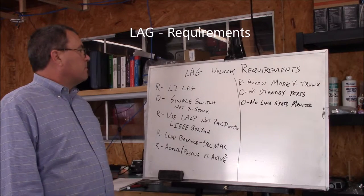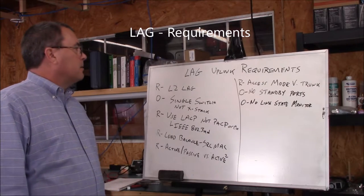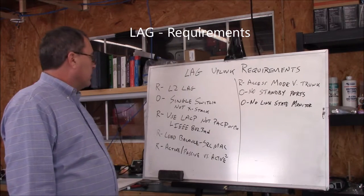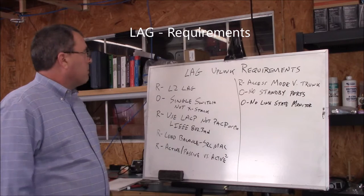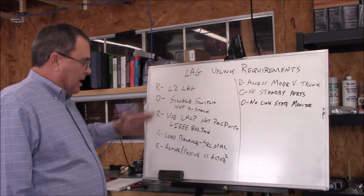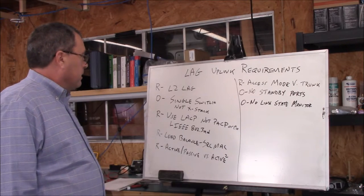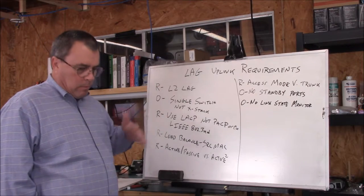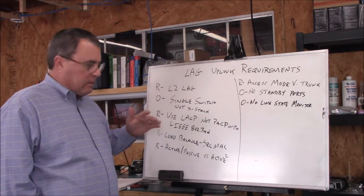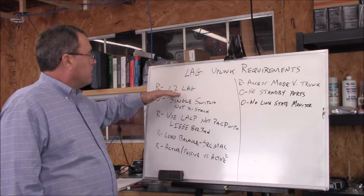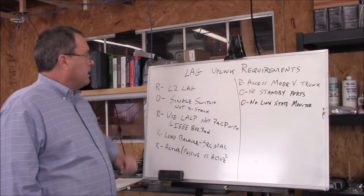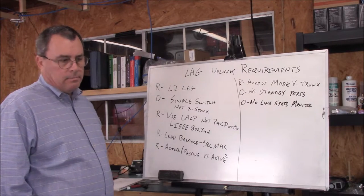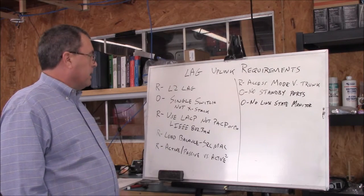Let's look at the requirements we're going to need for our network. We're going to make this a Layer 2 Link Aggregation Group. There are also Layer 3 link aggregation groups, but since we're using our Ethernet switch as a switch and not a router, we're going to stick with the Layer 2 LAG.